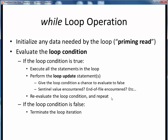Then we re-evaluate the loop condition, and if it's still true, we go through the loop one more time. Remember that if there's some sentinel value we're checking for, that value will be incorporated into the condition, and possibly updated by the loop update. But the first time the loop condition evaluates to false, loop iteration ends, and we're done with our while loop.